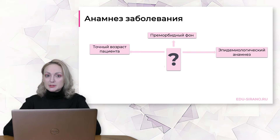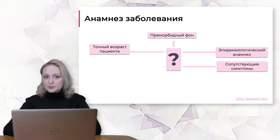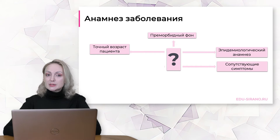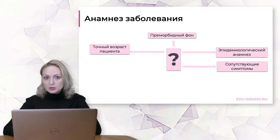При сборе анамнеза очень важно уделить внимание сопутствующим симптомам. Если у ребёнка с жалобами на увеличение лимфатических узлов отмечаются также жалобы на бледность, слабость, потерю веса, непонятную лихорадку, которая не связана с инфекционными эпизодами, и синкопальные состояния, то, безусловно, этот пациент должен быть очень тщательно обследован, поскольку лимфаденопатия в данной ситуации может оказаться симптомом очень серьёзного заболевания.